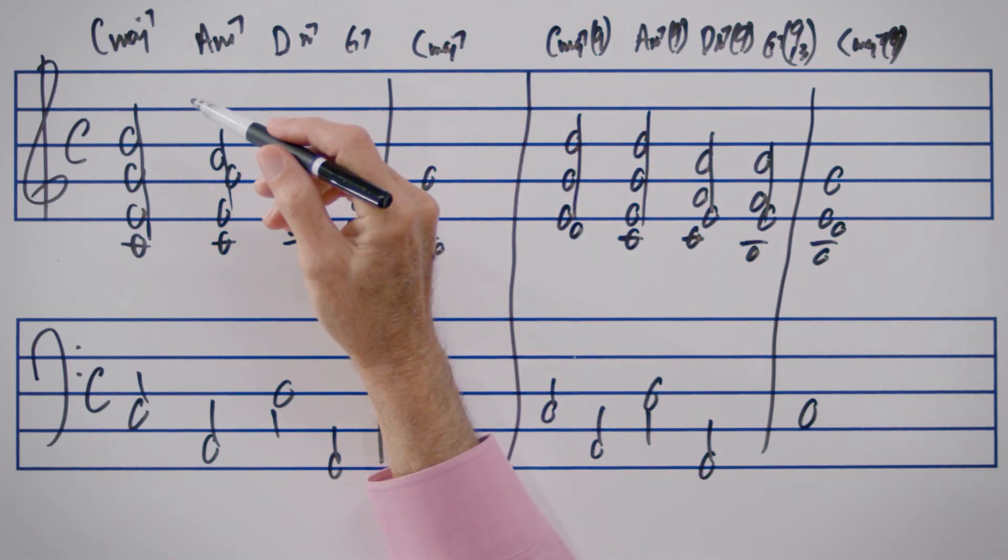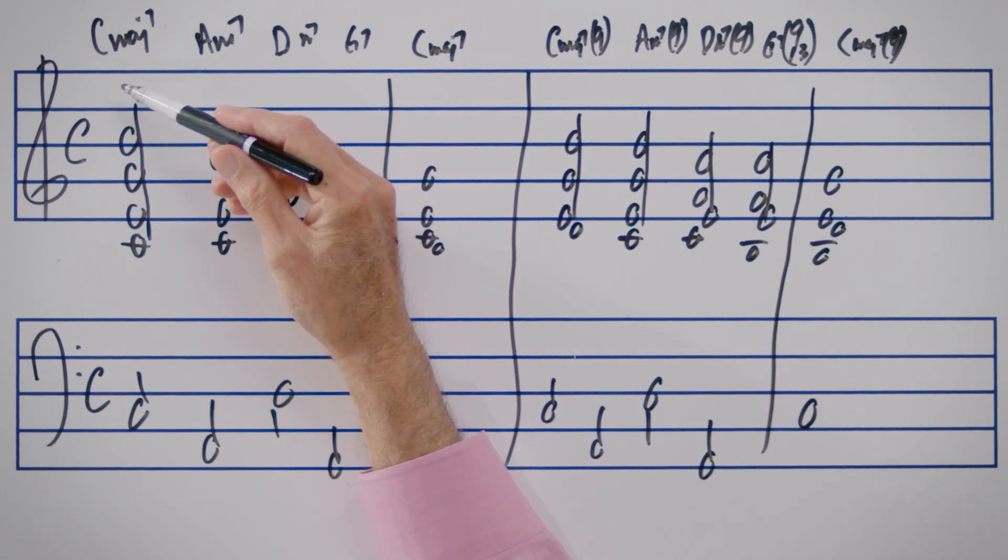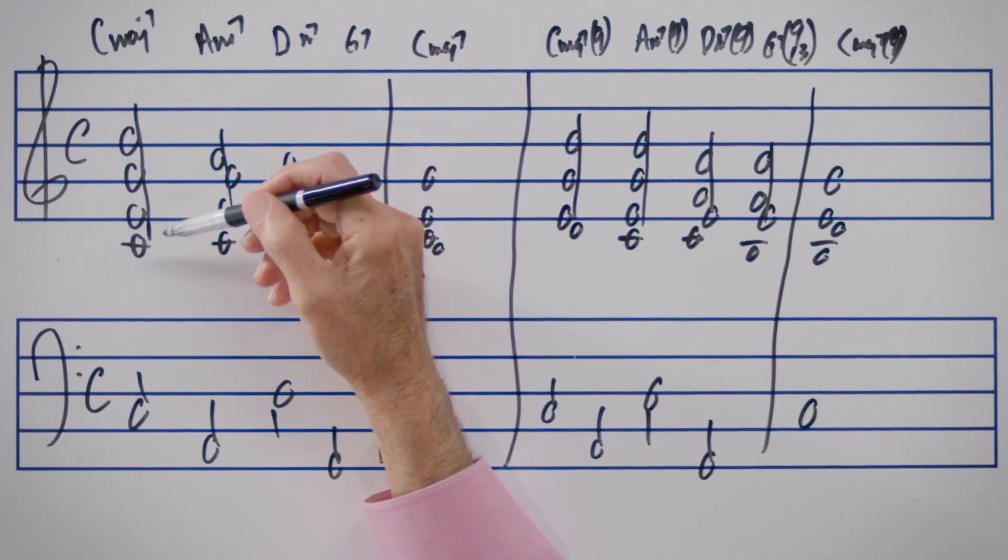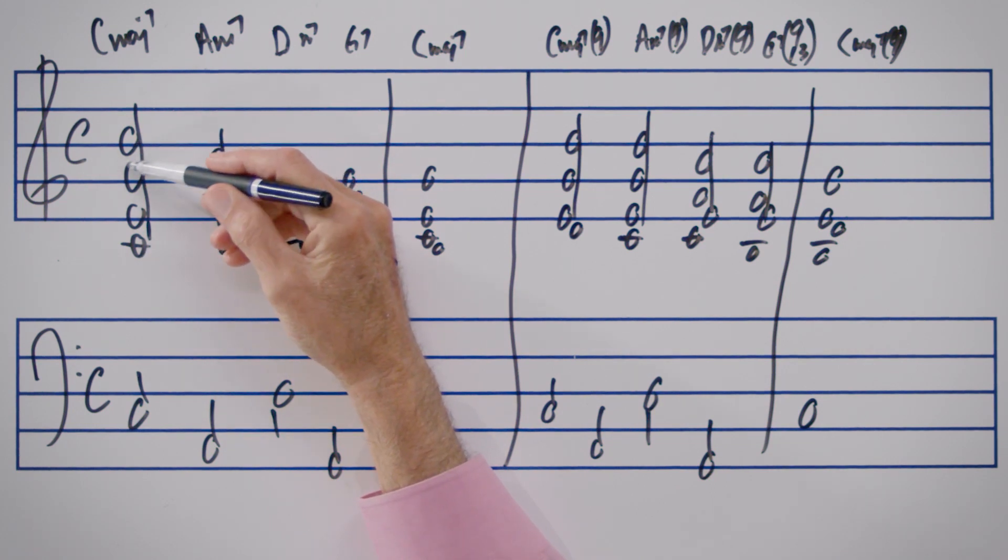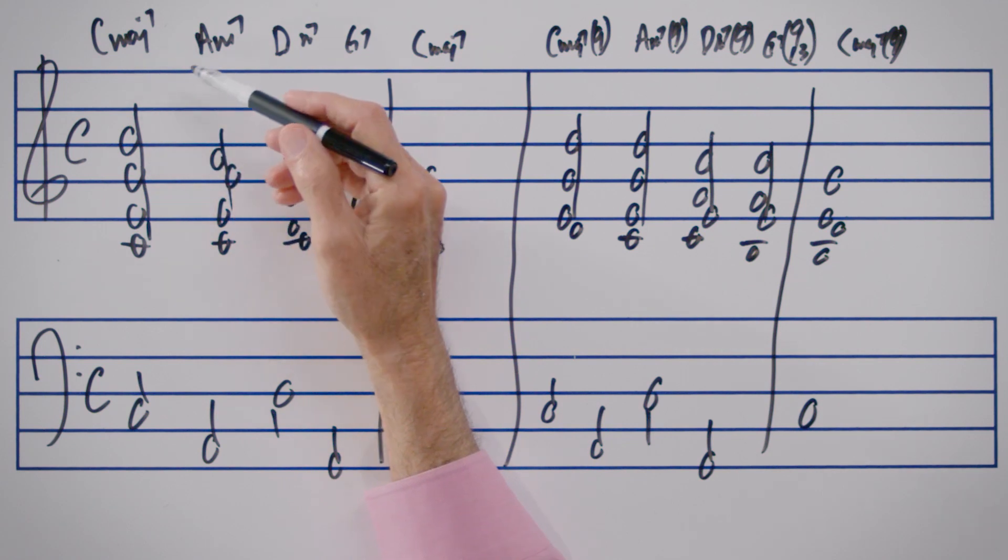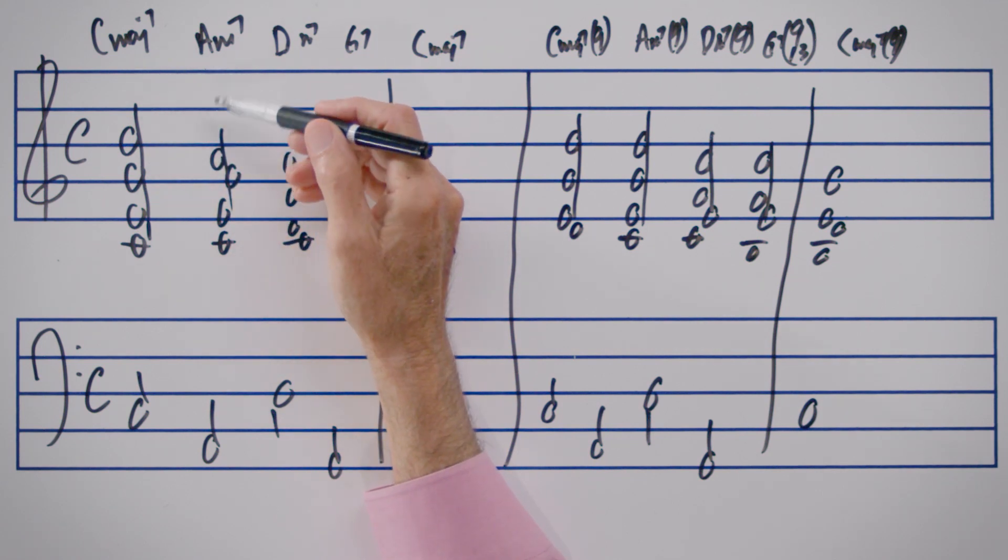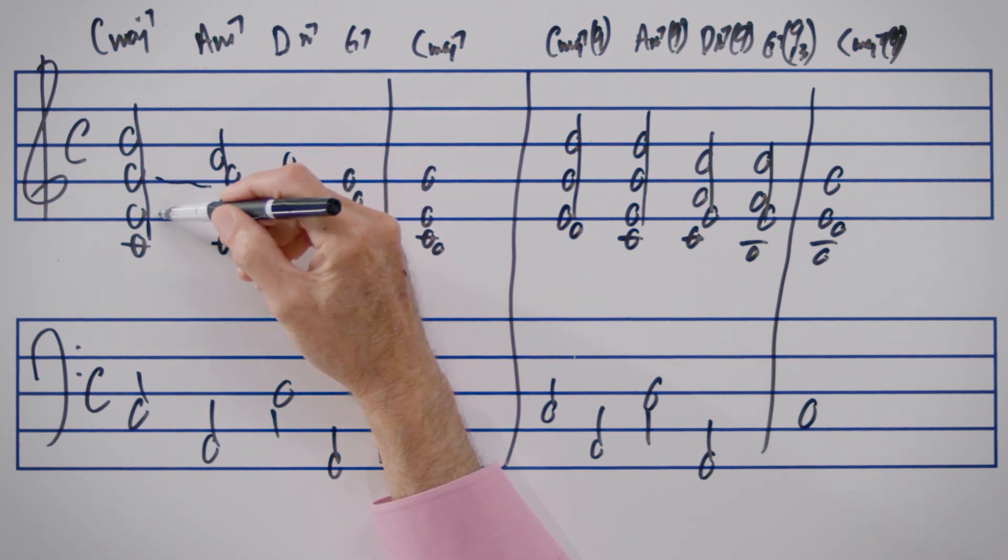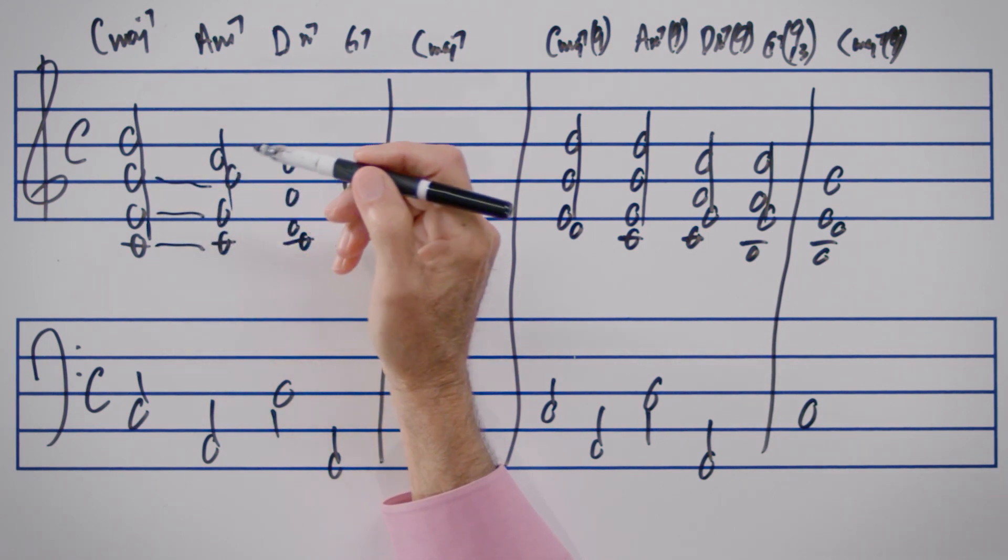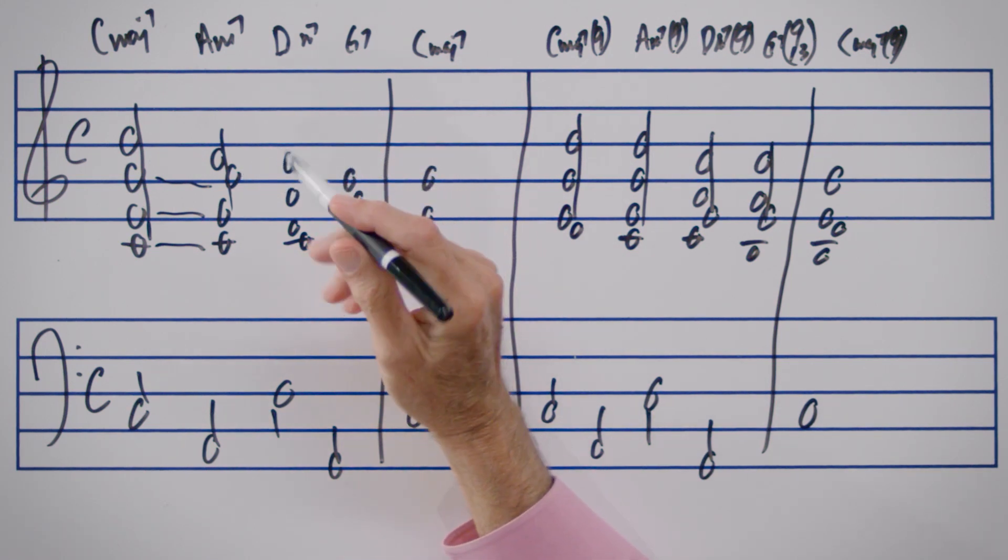So what I've done here is to write out the chords voice led as basic form, meaning no tensions added. The C major 7 is a chord made up of C, E, G, and B. I have that chord here, and then I have voice led the C major 7 to the A minor 7. We actually have three common tones in order to voice lead from the C major 7 to the A minor 7. The G is common, the E is common, and the C is common. So that makes the voice leading very simple.